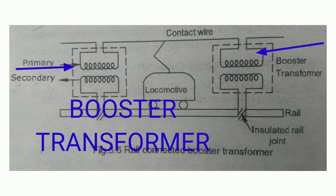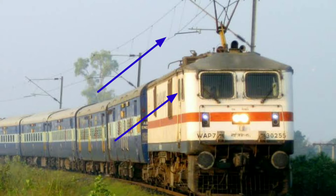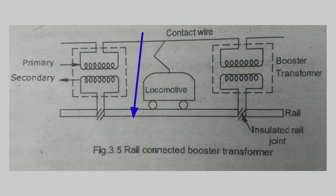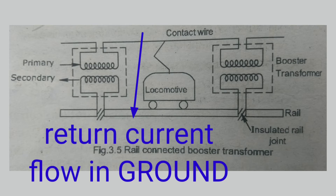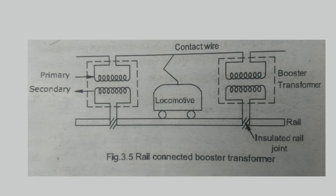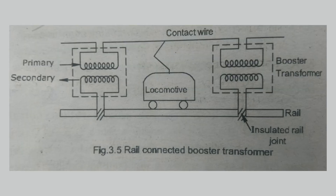In the Booster Transformers, we use an AC Traction System with a railway electric train. In the AC Traction System, the return current goes to ground. If it reaches the ground, the communications line will be affected — for example, a TV, a radio, or a telephone call will experience interference. This is a communication effect in the AC Traction System.